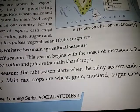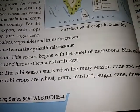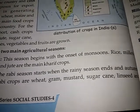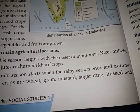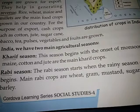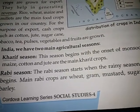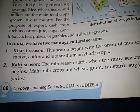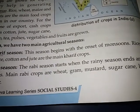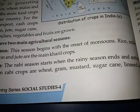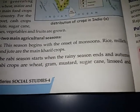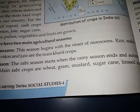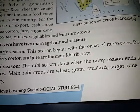In India we have two main agricultural seasons. First, the Kharif season - this season begins with the onset of monsoons. Rice, millets, maize, cotton and jute are the main Kharif crops.